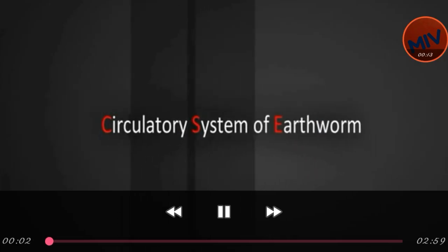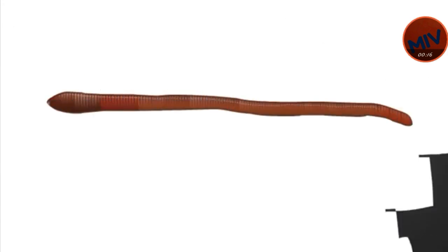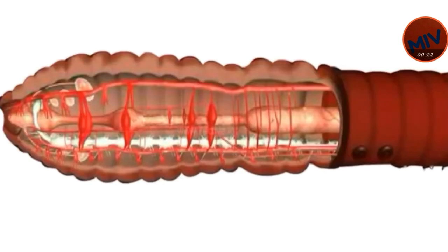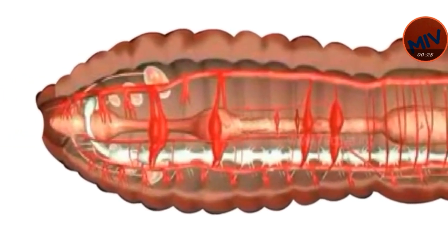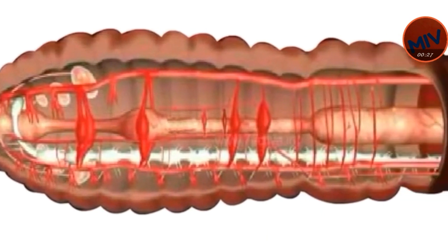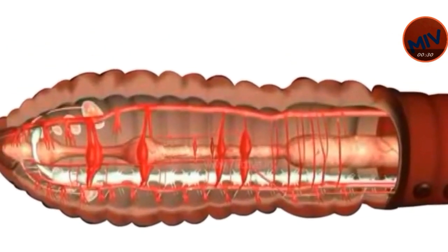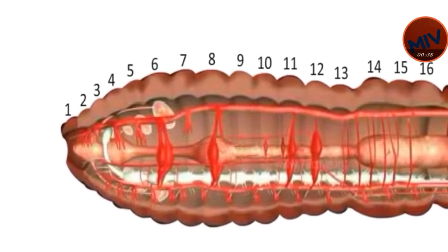Circulatory System of Earthworm. Earthworm has a closed circulatory system. The blood is formed of a red colored plasma and colorless amoeboid and nucleated leukocytes. Let us discuss different types of blood vessels found in earthworm.